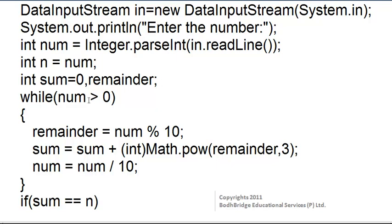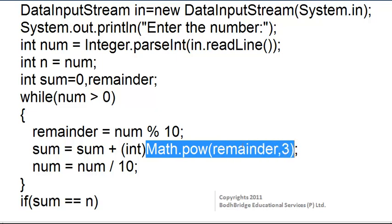In this while loop, the condition checks whether the number is greater than 0. If so, the following operations are performed: when the number is divided by 10, the remainder is found, which gives the last digit of the number. Then sum is equal to sum plus (int) Math.pow(remainder, 3), which gives the result for remainder to the power 3. The result is added to sum, and then the number is divided by 10, storing the quotient in the variable num.